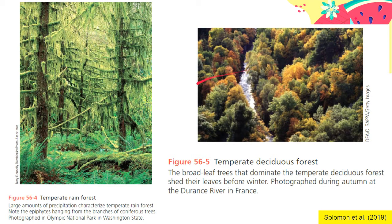These are more images of temperate deciduous forests. As you can see, there are large amounts of precipitation, and this is one of the major characteristics of temperate forests that enables the growth of very tall coniferous trees because they can get ample water from the soil. This one is from the Olympic National Park in Washington. Then we have another bird's eye view image of temperate deciduous forests — some of the leaves are turning brown and are about to be shed come autumn.